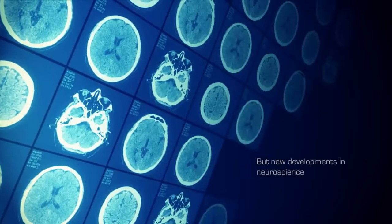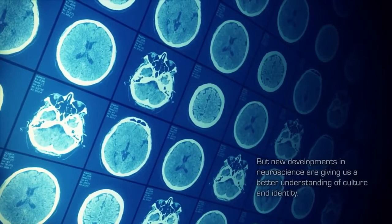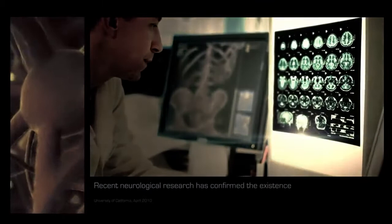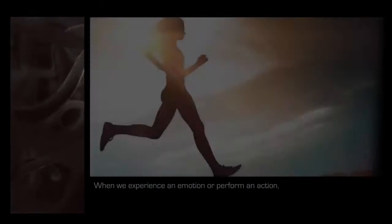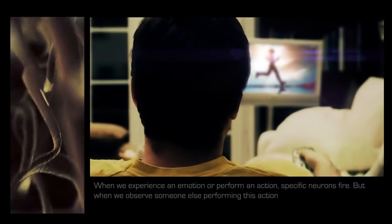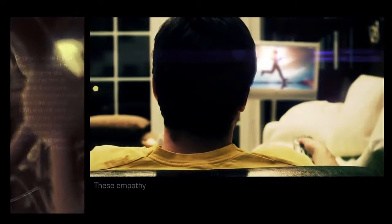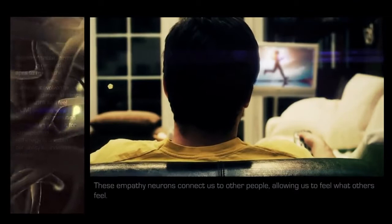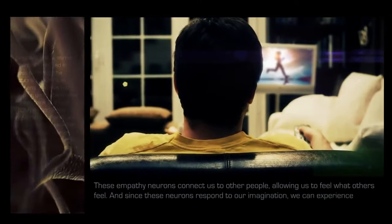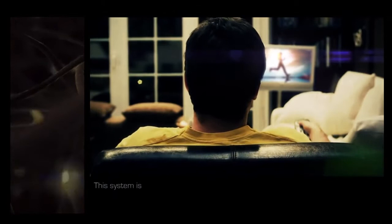But new developments in neuroscience are giving us a better understanding of culture and identity. Recent neurological research has confirmed the existence of empathetic mirror neurons. When we experience an emotion or perform an action, specific neurons fire. But when we observe someone else performing this action, or when we imagine it, many of the same neurons will fire again, as if we were performing the action ourselves. These empathy neurons connect us to other people, allowing us to feel what others feel. And since these neurons respond to our imagination, we can experience emotional feedback from them as if it came from someone else. This system is what allows us to self-reflect.